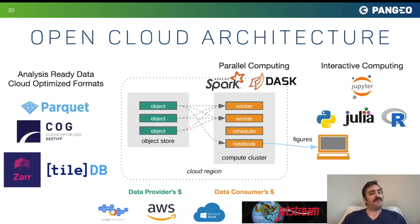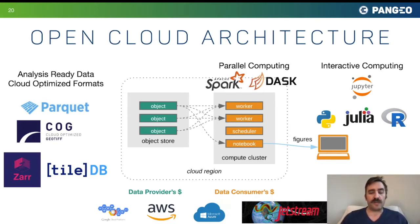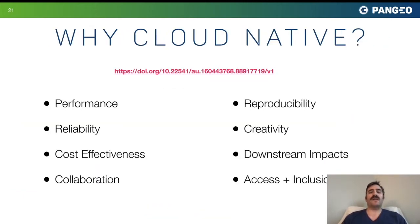This type of architecture is very general and flexible. It can be deployed on any cloud, or on on-premises architecture, and to some degree on traditional high-performance computing environments. So, before getting into the technical details, I want to explain and motivate why this is a really productive direction for scientific research. Why cloud-native? Why do we want to transition to this type of workflow?